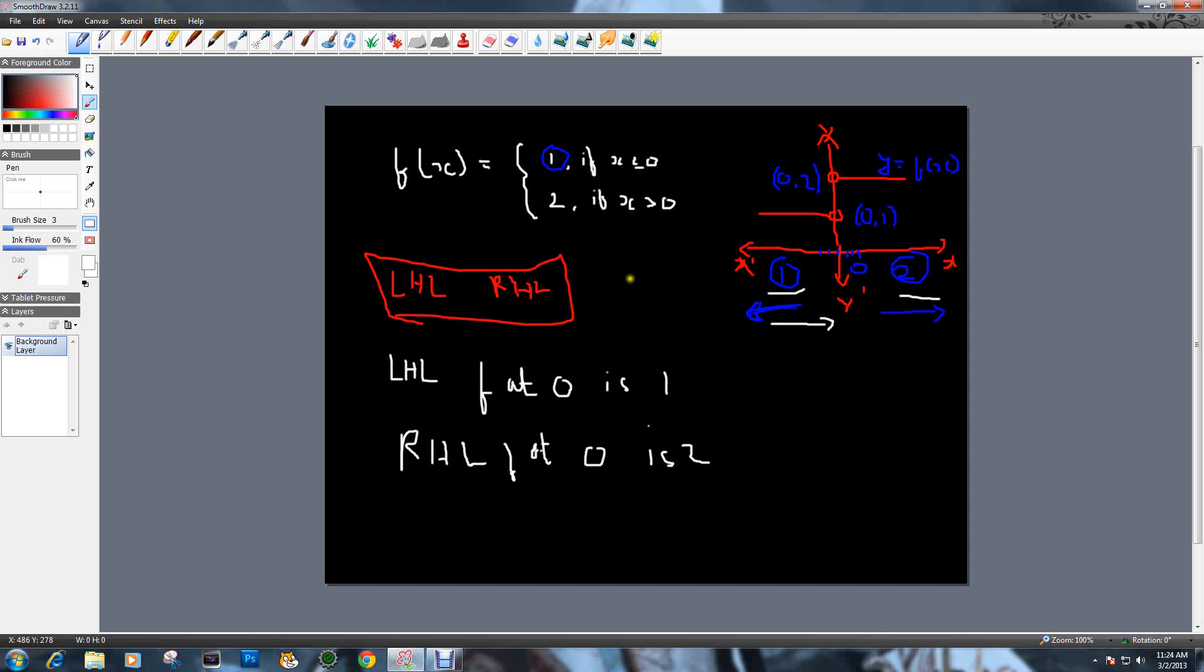As I mentioned in my previous video, for the given function to be continuous at x is equal to 0, the left-hand limit must be equal to the right-hand limit. But in this case, the left-hand limit of f at 0 is 1, whereas the right-hand limit of f at 0 is 2. I'm sure that in your right mind, you would never say 1 is equal to 2. So the given function is discontinuous at 0.